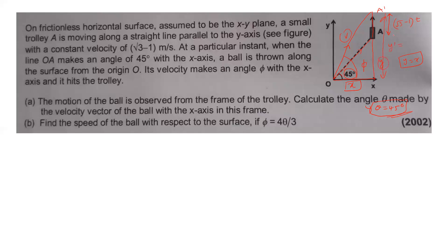We have y-dash equals y plus root 3 minus 1 into t. The velocity V has two components: x-component is V cos phi and y-component is V sin phi. The x-axis component gives x equals V cos phi into t.